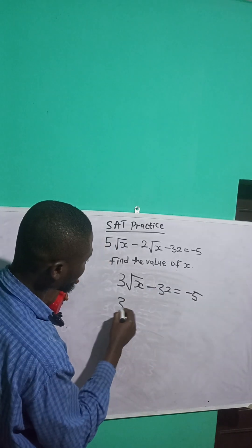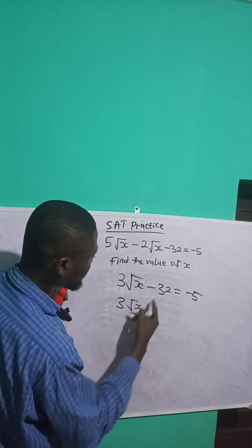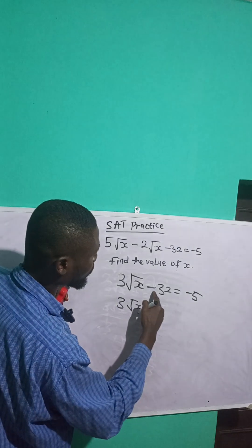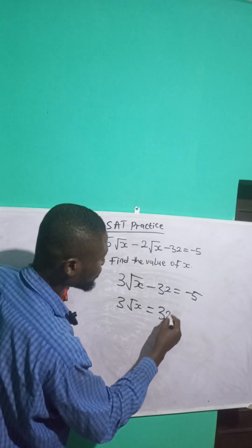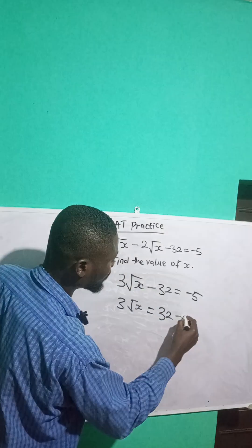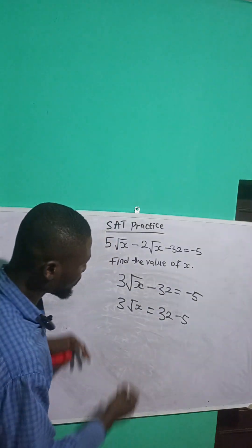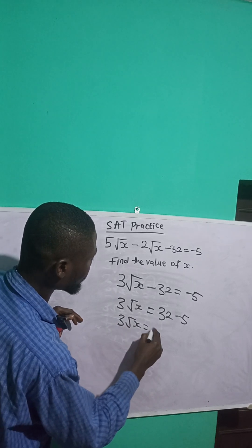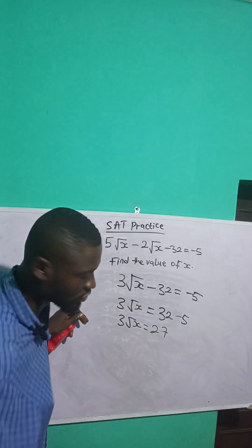So I have 3√x minus 2 equals minus 5. I want to collect like terms, so I will transpose the 2 to the other side — the negative sign goes away. So I have 3√x is equal to 27, because minus 5 plus 32... that is, 3√x equals 27.